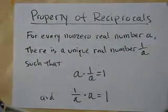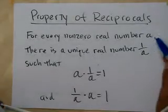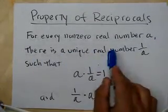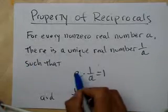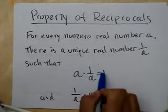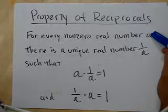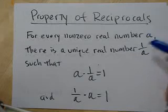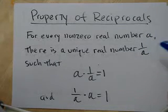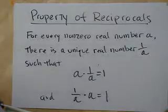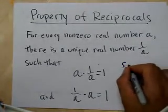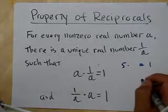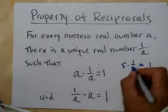Property of reciprocals. For every non-zero real number a, there is a unique real number 1 over a, such that a times 1 over a equals 1. So every number a has another number that, when multiplied, gives you 1. That number is called its reciprocal. For instance, 5 has something you can multiply it by to get 1 — its reciprocal, 1 over 5.